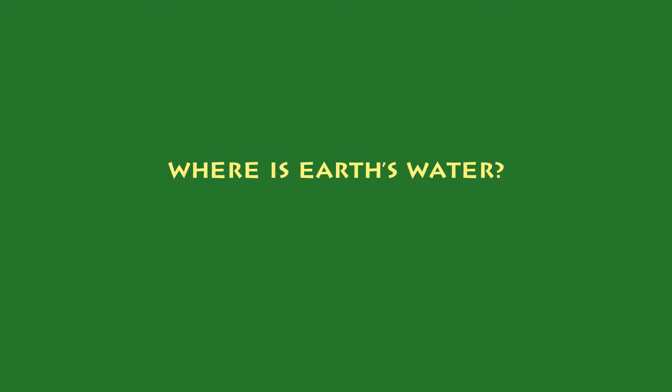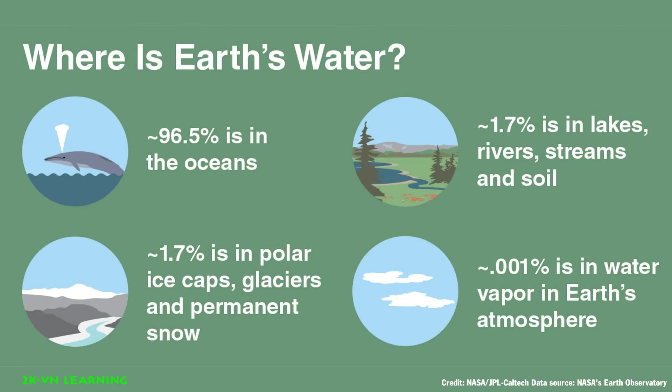So where is Earth's water? It can be found everywhere, even underground, in ice, and in mountains. 96.5% of Earth's water is in the oceans, that's where animals live. 1.5% is in polar ice caps, glaciers, and permanent snow. 1.7% is in lakes, rivers, streams, and soil.